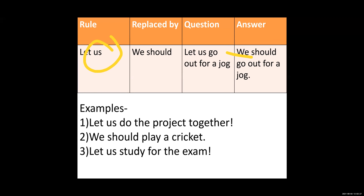Second: 'we should play cricket.' Here the sentence is in assertive; you have to convert it into imperative. So instead of 'we should,' it becomes 'let us play cricket.' Third question: 'let us' is given, so instead of 'let us' we write 'we should study for the exam.' So students, all these points are very important in writing skills, so focus on them.